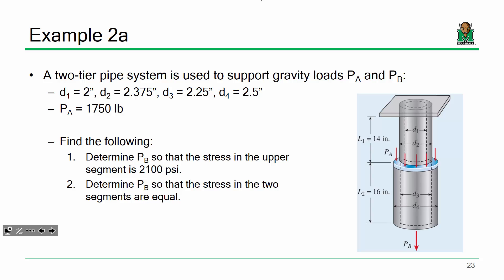We've got this two-tier pipe system being subjected to two forces, at point A and point B. I've got a force where the two pipes join and a force at the very bottom. The force at A is 1,750 pounds. For part one, I want to determine how much force B needs to be so that I get a stress in the upper segment of 2,100 PSI. For the second part, we're going to determine what this force needs to be so that the two stresses are equal to one another.